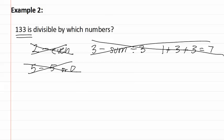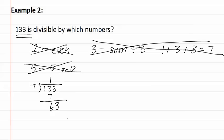This means we must start with number seven from the list of prime numbers. Remember, with numbers seven and above, we must use long division. Seven goes into thirteen one time, which leaves six and a three. Seven goes into sixty-three nine times with a remainder of zero. Since both seven and thirteen are prime numbers, we know we are finished. The two numbers that 133 is divisible by are seven and thirteen.